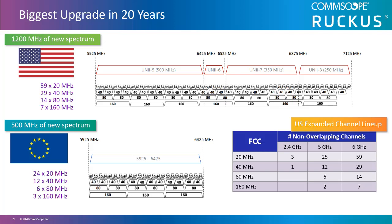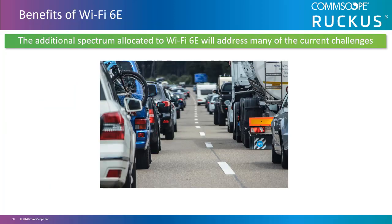Theoretically, wider channels translate into faster speeds, so the 80 MHz and 160 MHz channels supported under current Wi-Fi standards should offer higher throughputs. In reality, many of these channels are non-contiguous, limiting the wide channel advantage and constraining throughput. The spectrum allocated to Wi-Fi 6E will address many of these current challenges.